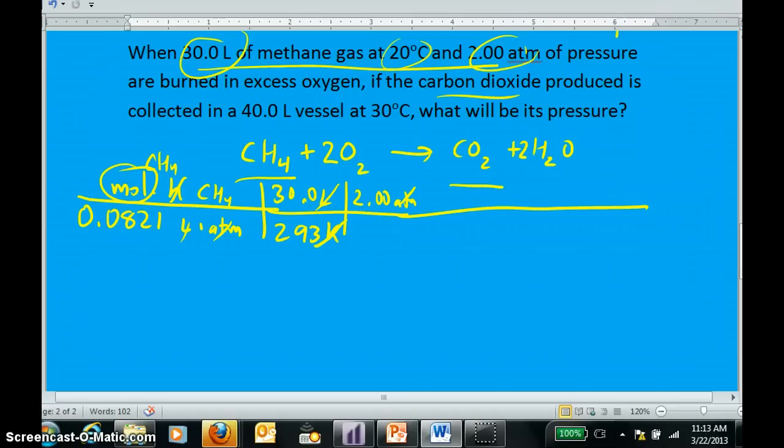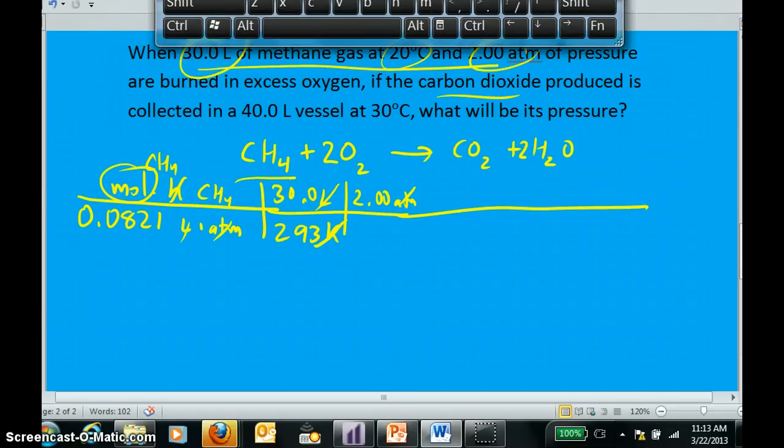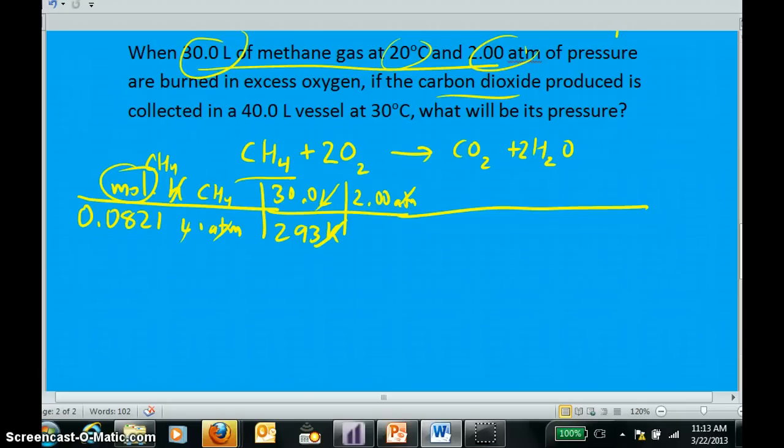So, the rest of my stoichiometry is how I've always done it. Namely, I use the balance equation stoichiometric ratio to go from methane to carbon dioxide. And it's one to one. One mole of methane produces one mole of CO2. Cancel, cancel. And we have moles of CO2.